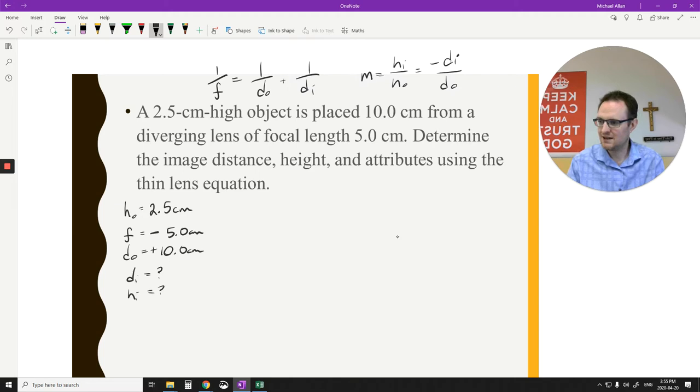I think it's going to be virtual, diminished, and erect or upright. So that's what I think it's going to be, these are my estimations. Let's go through the formula here, so you've got 1 over f equals 1 over do plus 1 over di. We're going to solve for 1 over di here, so 1 over di equals 1 over f minus 1 over do.